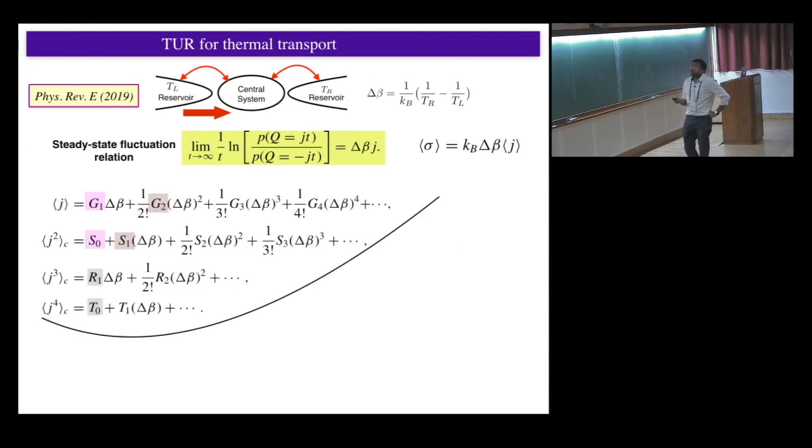So given this, in steady state, since your current has a distribution, you can write down what's the average current, what's the variance. C is the cumulant. You can do it for all cumulants of current. And you can expand in steady state as a function of bias. For example, G1 is the conductance - this is like linear response or Fourier's law, if you like. And these are higher order coefficients. Similarly for noise, you have equilibrium noise and higher orders. I want your attention here - this is the third cumulant and this R1 is the linear coefficient.